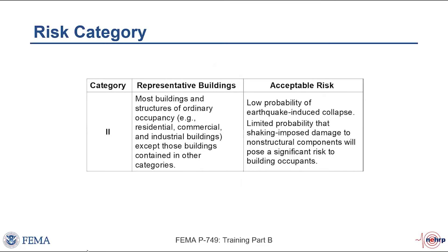Most buildings and structures we design will be in Risk Category 2. Rather than a long list, the building code simply says that if you're not in Risk Category 1, 3, or 4, you are in Risk Category 2. This includes most buildings we live and work in. The goals for Risk Category 2 include a low probability of earthquake-induced collapse, plus we seek to limit the probability that shaking-imposed damage to non-structural components would pose a significant risk to building occupants.